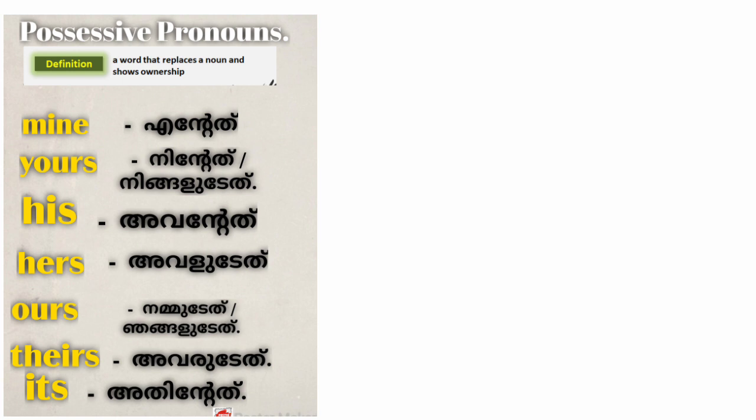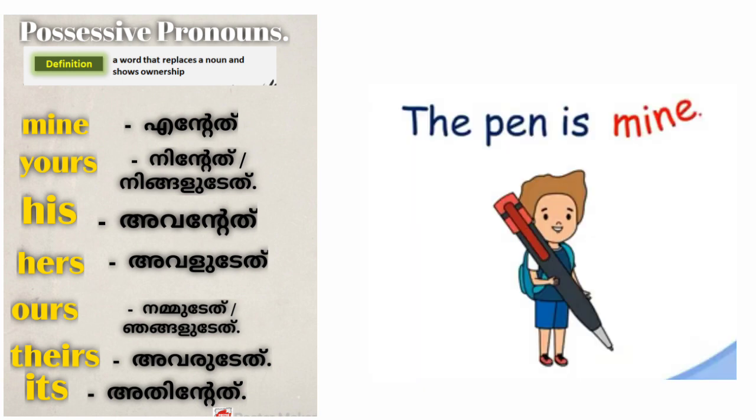Let's see the list of possessive pronouns: first, 'mine'; second, 'yours'; third, 'his'; then 'hers'; then 'ours'; then 'theirs'; and 'its.' Now let's see some examples. The girl says 'the pen is mine' — which is the possessive pronoun there? Yes, 'mine.' Very good!